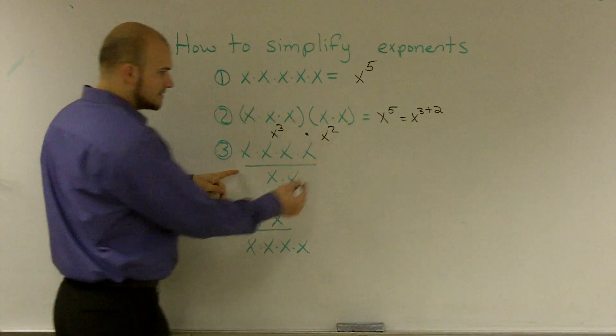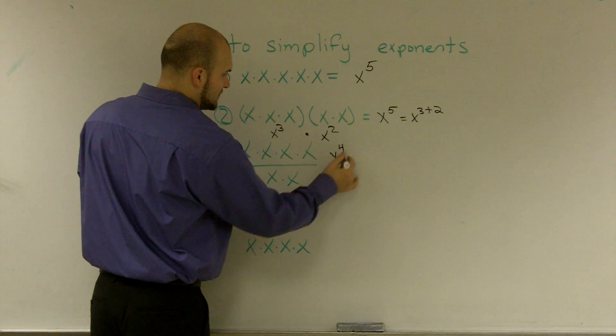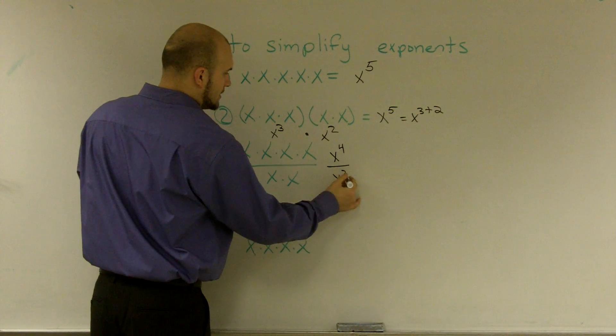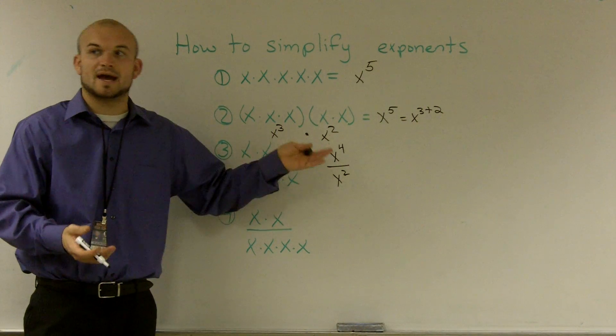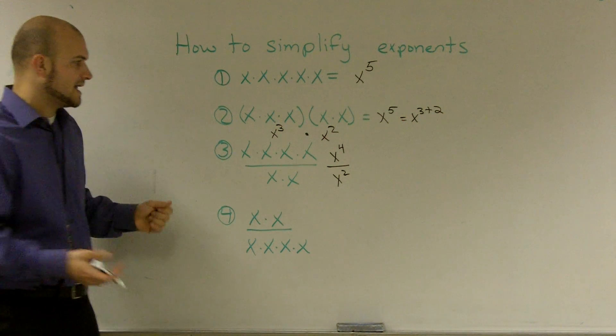Essentially over here, this is x to the fourth over x squared. Now you could say, well, if you multiply you add, when you divide you subtract. Well, let's go and look at why does that happen.